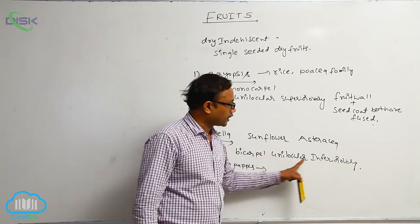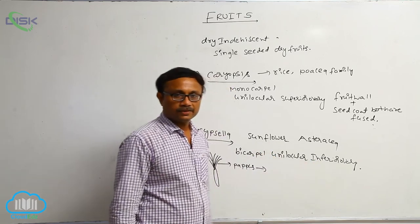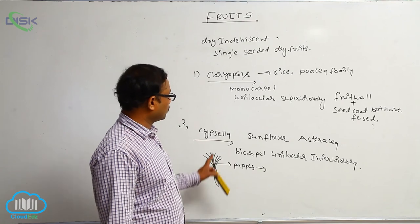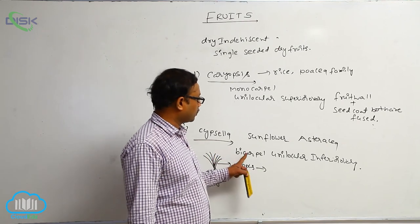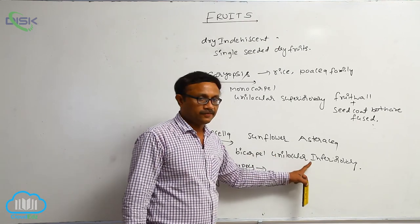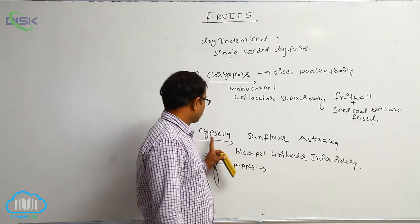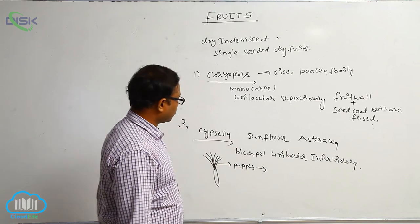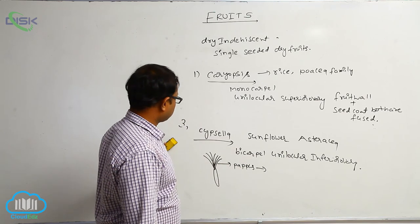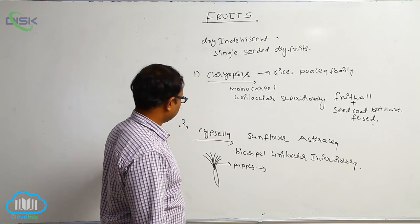Cypsela is bicarpel, unilocular, and formed from an inferior ovary. The fruit is formed from bicarpel, unilocular, and inferior ovary. So that is known as cypsela — example sunflower, Asteraceae family.